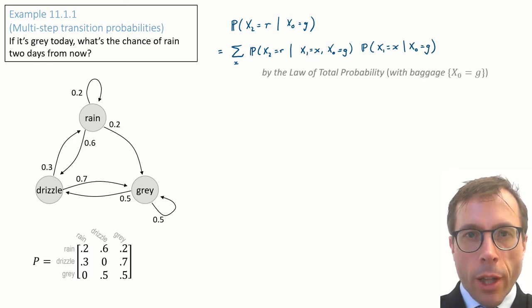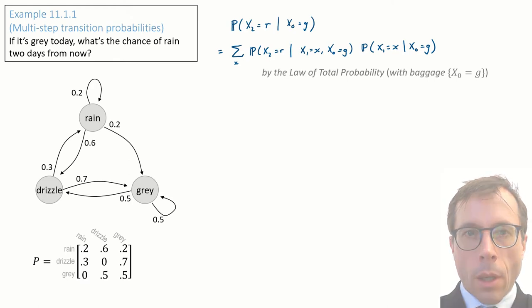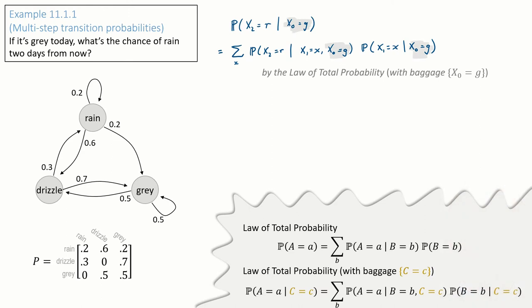For the first step of the calculation, I'm going to condition on the value of x1. This is using the law of total probability. Here's the law of total probability written out in its general form. There are actually two standard ways to write it.